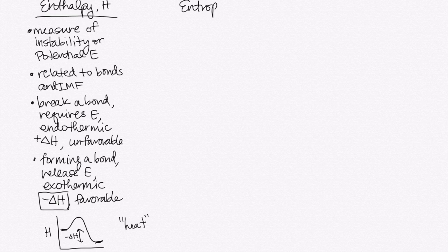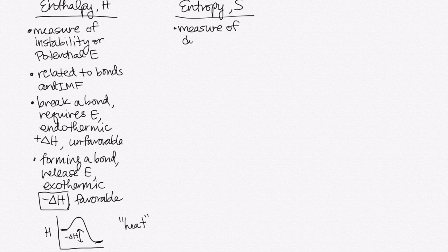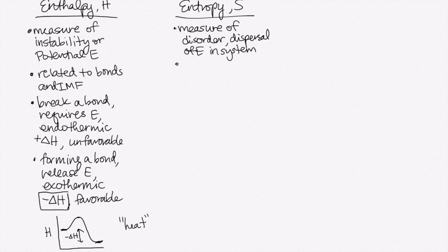The second thing we'll want to talk about is entropy, which has a symbol S. And this can be thought of as a measure of disorder, although that's not a technical definition. It can also be thought of as the dispersal of energy in the system. So the more ways that it can be arranged, we call those microstates. The more microstates means that you have more entropy in the system.